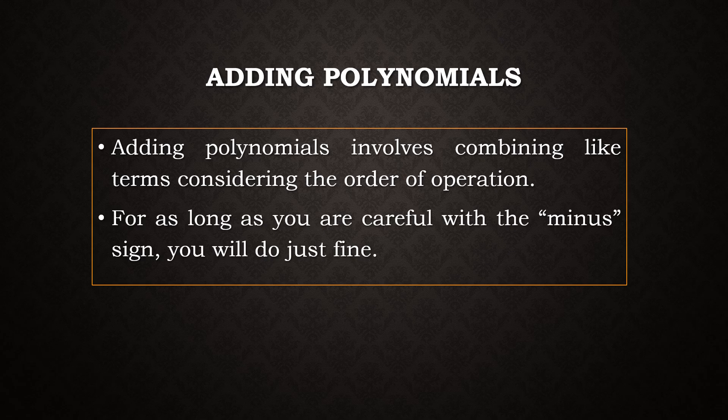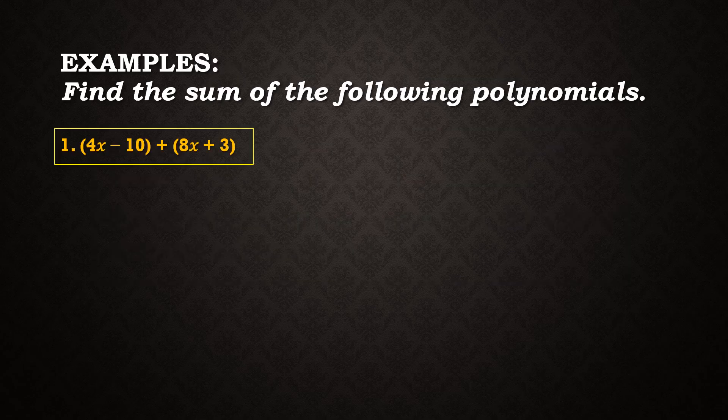In adding polynomials, it involves combining like terms considering the order of operations. For as long as you are careful with the minus sign, you will do just fine. For example, if we are given 4x minus 10 plus the quantity 8x plus 3, we can use two methods to solve this problem. So let us first look into the horizontal method.